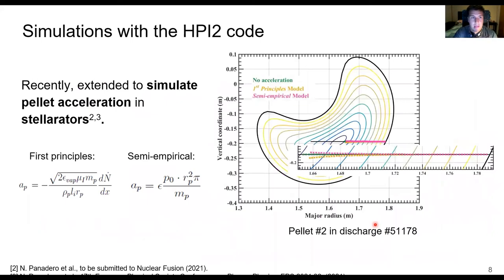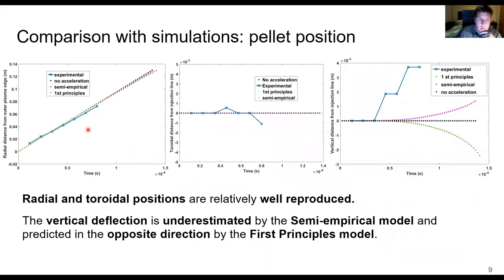In addition, the hydrogen pellet injection 2 code was recently extended to simulate the pellet acceleration in stellarators according to different models, the first principle model and the semi-empirical model, which calculate the pellet acceleration according to these two formulas. If these results are compared with the experimental observations, we can conclude that the radial and toroidal positions are relatively well reproduced by both models. However, the vertical deflection is underestimated by the semi-empirical model and predicted in a completely opposite direction in the first principle model.